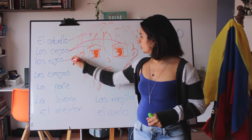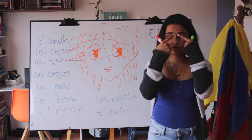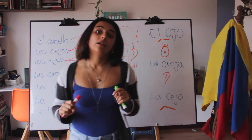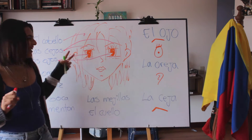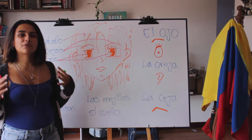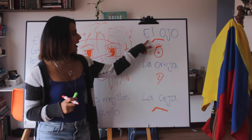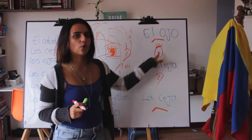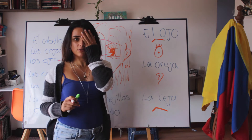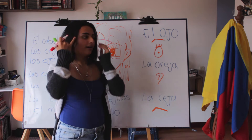Los ojos — ojos means eyes, but that's in the plural. When we're talking about just one, it's different: el ojo. Similarly, la ceja is one eyebrow, and la oreja is one ear.